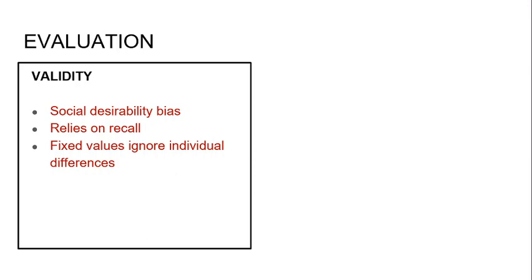The third problem is that the fixed values on the scale ignore individual differences. Take the example of pregnancy — that can involve a completely different level of adjustment for two different people. For someone who already has kids, pregnancy might not be such a big deal. But for someone experiencing an unwanted or unexpected pregnancy, there could be massive adjustment and stress associated with it. So fixed values do ignore the fact that individual differences may really affect how someone experiences these events — this applies particularly to the SRRS, but equally the daily hassles scale could be affected by individual differences too.